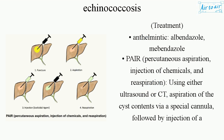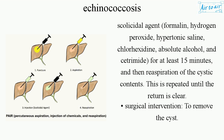Treatment. Anthelmintic drugs: albendazole, mebendazole. Percutaneous aspiration, injection of chemicals, and re-aspiration (PAIR), using either ultrasound or CT. This involves aspiration of the cyst contents via a special cannula, followed by injection of a scolicidal agent — formalin, hydrogen peroxide, hypertonic saline, chlorhexidine, absolute alcohol, or cetrimide — for at least 15 minutes, then re-aspiration of the cystic contents. This is repeated until the return is clear.